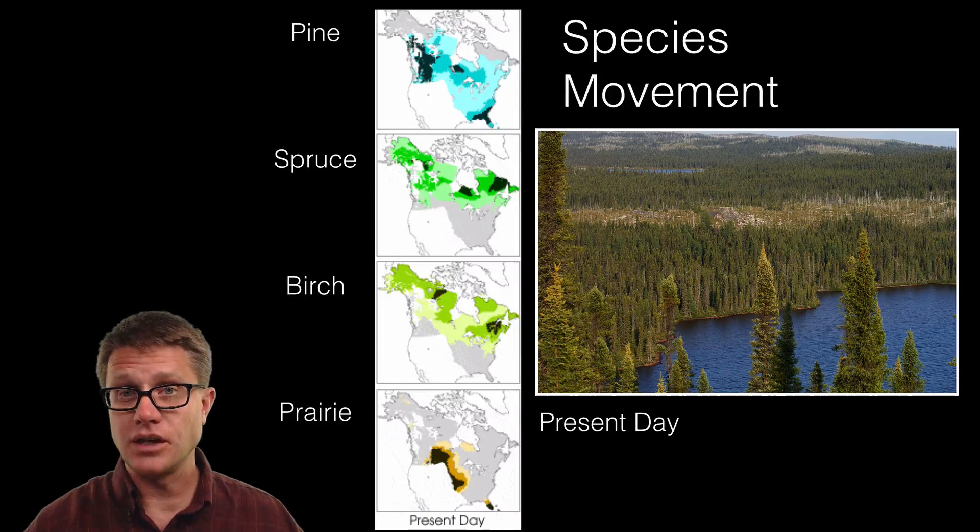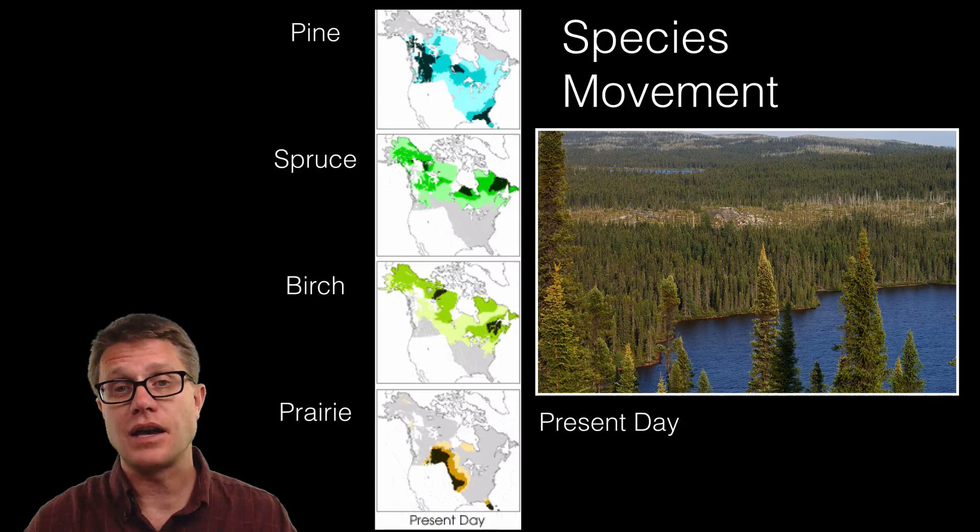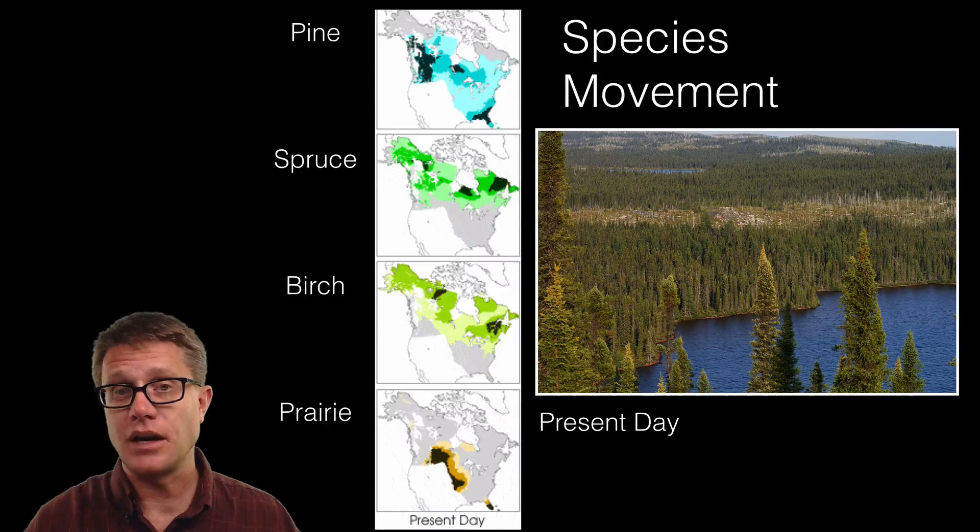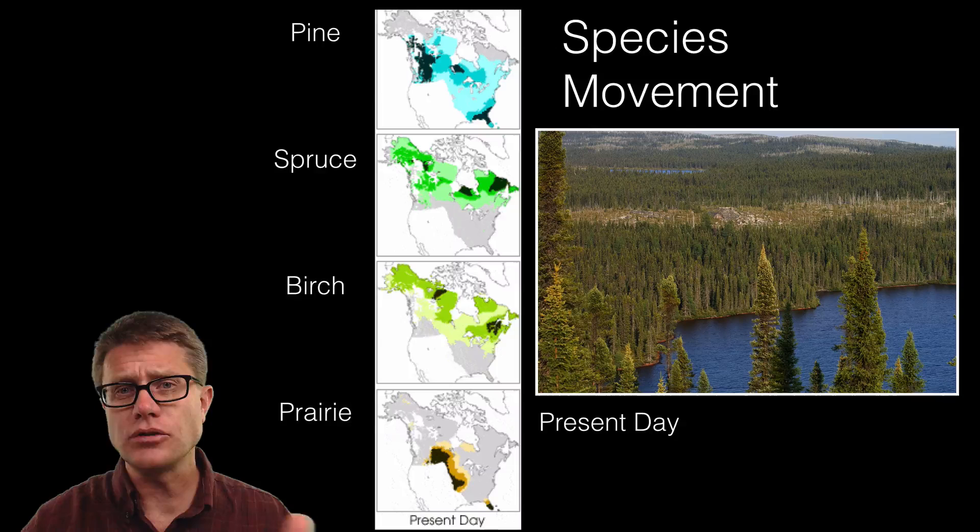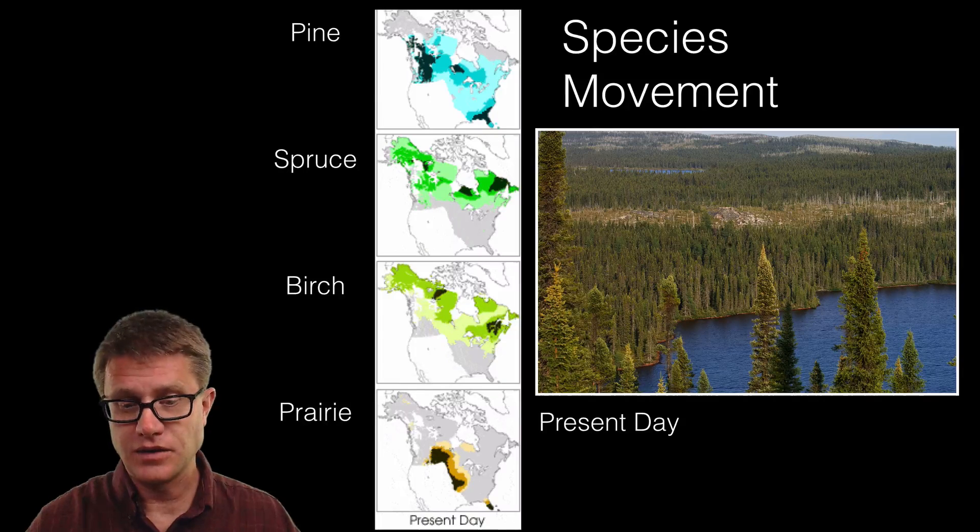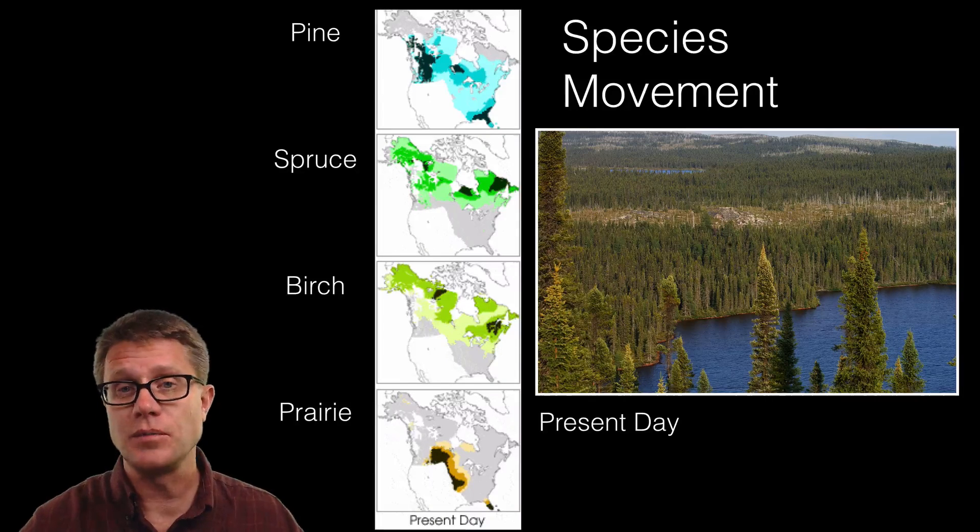So you can see that as the ice retreated, the plants moved into that area. Now they are not like polar bears. They cannot walk. And so this is a slow transition. But the movement of seeds, the movement of pollen moves them into that area.